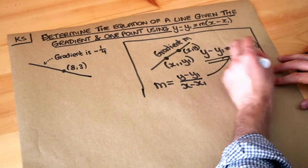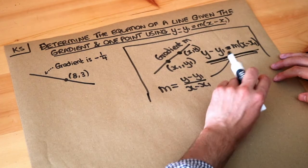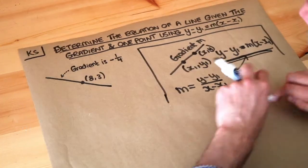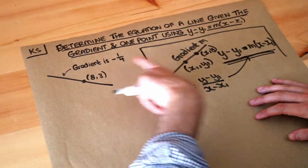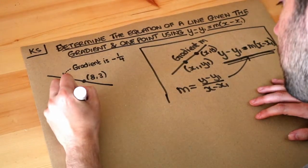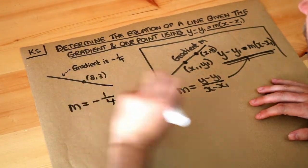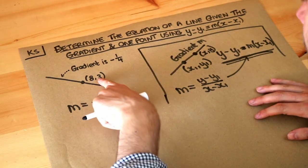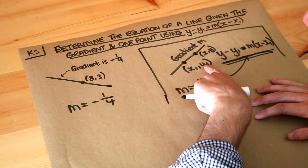So this is the key formula that we're going to use to solve this problem. So let's write out what we know. We know that the m, the gradient, is minus a quarter because we're told that, and we know that the fixed point is 8, 3, so that is your x1, y1.